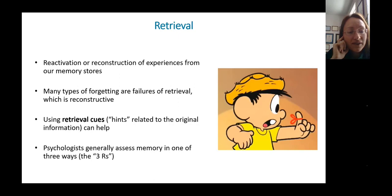Hints can help us remember what we were trying to remember. Those are called retrieval cues. So the string around the finger is a not particularly good retrieval cue.